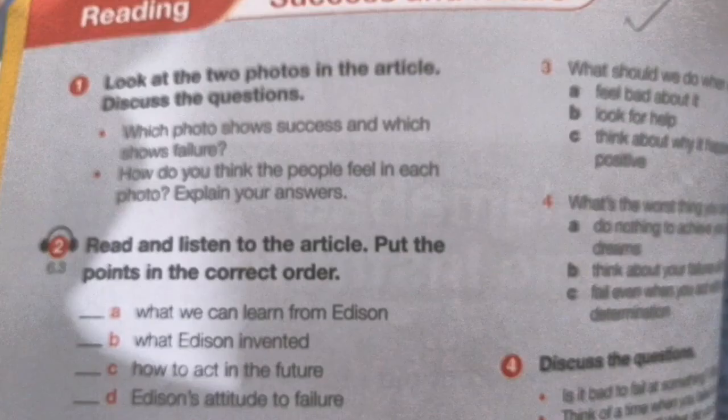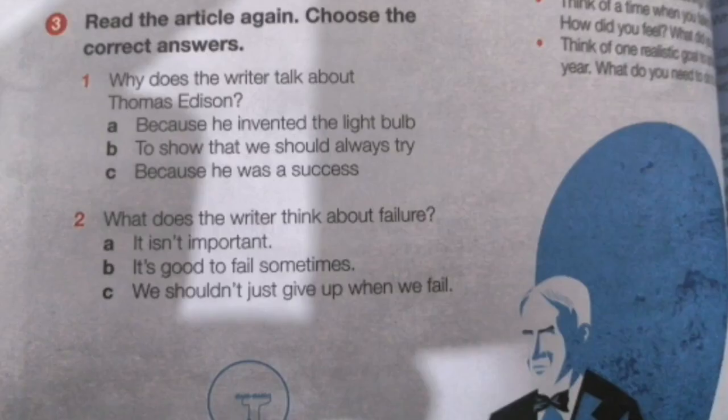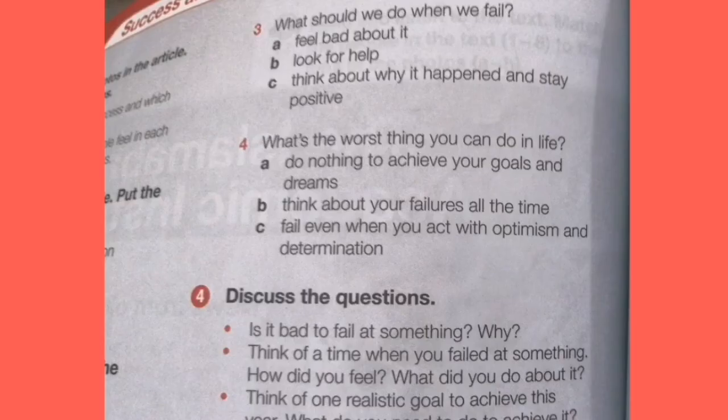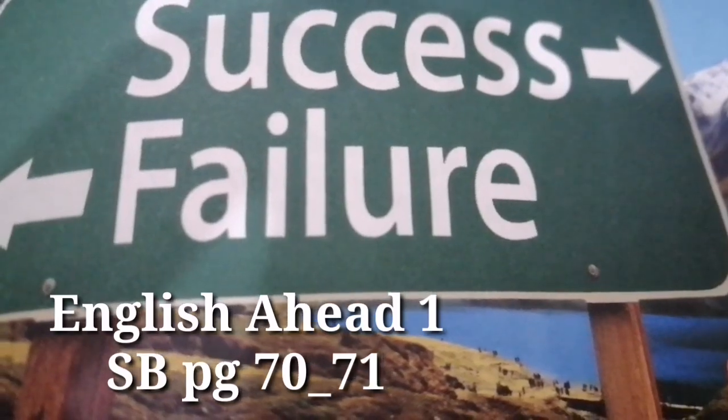It's your student book, page 70 and 71, and there are five exercises. You will read and solve these exercises. There are some questions to discuss after reading the article. You will discuss these questions, and the very topic is success or failure.